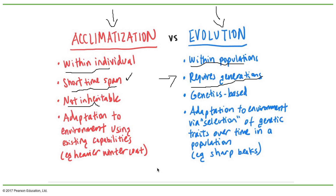Acclimation doesn't require genetic changes, while evolution has a genetic base. Both involve adaptation to the environment, but acclimation uses existing capabilities while evolution is based on selection of genetic traits. Although they look similar, these two options are completely different. I hope the question and answer were clear — if you have any doubt, let me know.